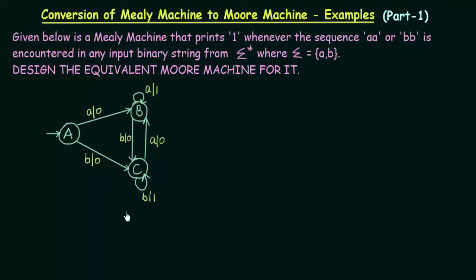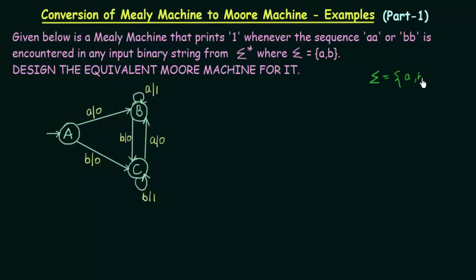We have a Mealy machine given here that we already designed in one of our previous lectures. What this Mealy machine does is print 1 whenever the sequence AA or BB is encountered in any input binary string. Our inputs are A and B, and our outputs are 0 and 1. Always make sure what your inputs and outputs are before you start.